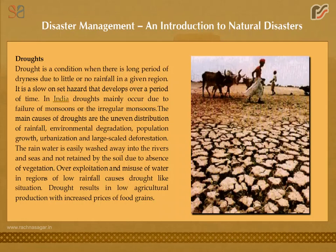The main causes of droughts are uneven distribution of rainfall, environmental degradation, population growth, urbanization, and large-scale deforestation. Rainwater is easily washed away into rivers and seas and not retained by the soil due to absence of vegetation. Over-exploitation and misuse of water in regions of low rainfall causes drought-like situations.